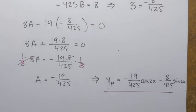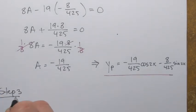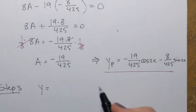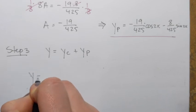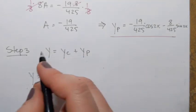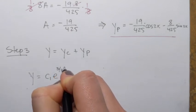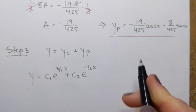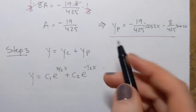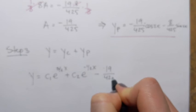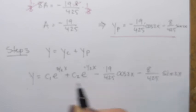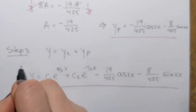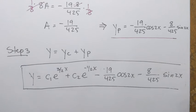Step 3 is to write the general solution. The general solution is the complementary function plus the particular solution: y equals c1·e^(3/2·x) plus c2·e^(-1/2·x) minus 19 over 425 times cosine(2x) minus 8 over 425 times sine(2x). That is the general solution to the given linear non-homogeneous equation.